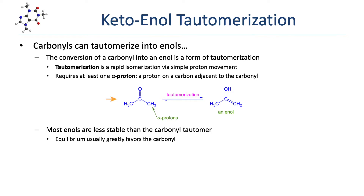Tautomerization requires that the carbonyl have at least one alpha proton — a proton on a carbon adjacent to the carbonyl. Most enols are considerably less stable than the carbonyl tautomer, which means that the equilibrium of most tautomerizations greatly favors the carbonyl. The concentration of enol at equilibrium is very low.